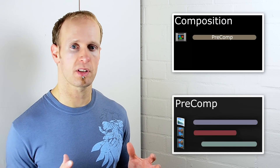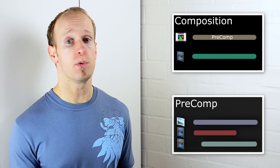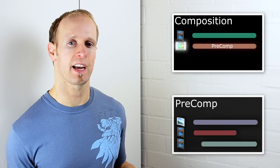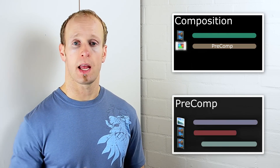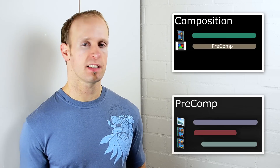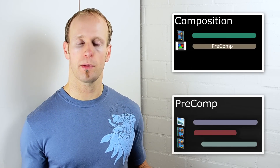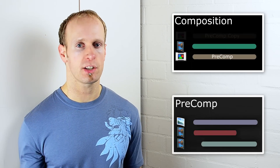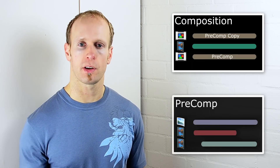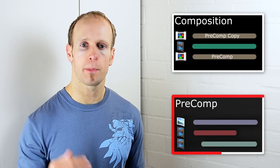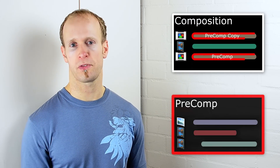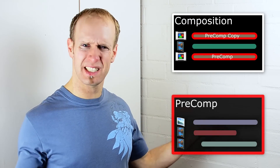Another reason is that once you pre-compose a number of layers, you can treat them like a single element and move them around or apply effects to the entire group. But the biggest reason, in my opinion, is that compositions give you a way of creating reusable elements. You create a single composition, use as many duplicates as you want to, and by changing the contents of the original composition, all of those copies will reflect the change. Let's have a look at how all of this applies to After Effects.